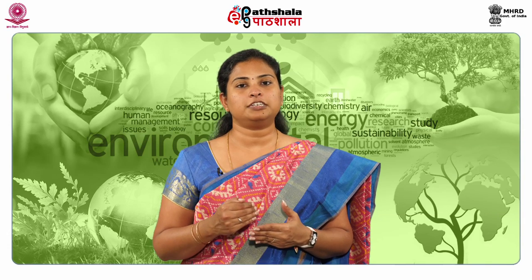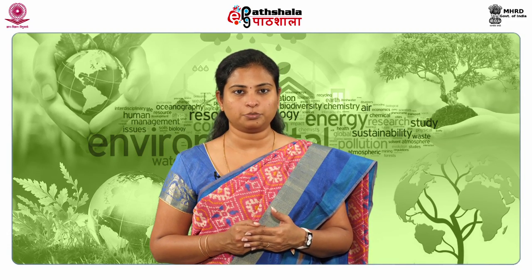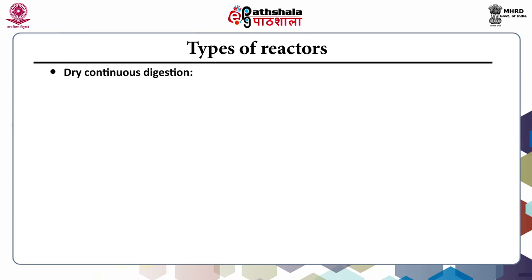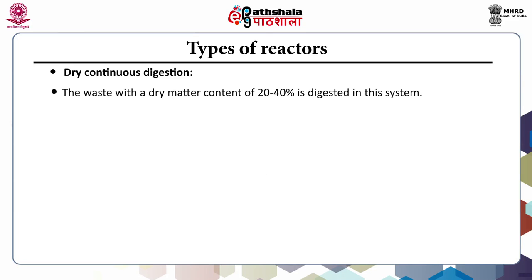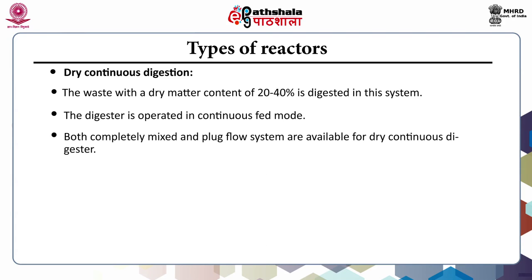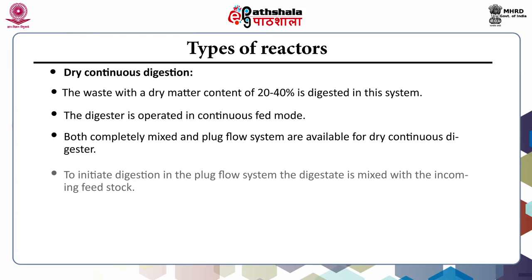The different types of reactors used in anaerobic digestion include, first, dry continuous digestion, where the dry matter content of 20 to 40 percent is digested. The digester is operated in continuous mode; both completely mixed and plug flow systems are used. To initiate digestion in a plug flow system, the digestate is mixed with the incoming feedstock and then inserted.